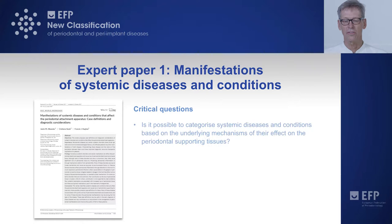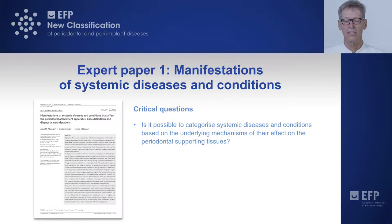Number one: is it possible to categorize systemic diseases and conditions based on the underlying mechanism of the effect on the periodontal supporting tissues? In other words, how do they affect the periodontal tissues in a negative way?